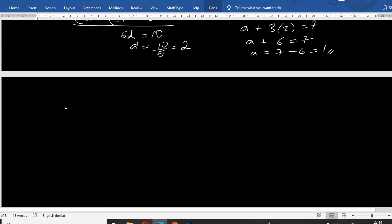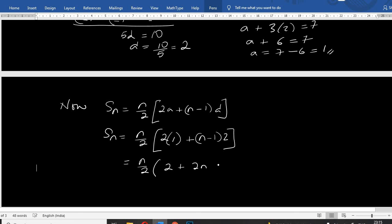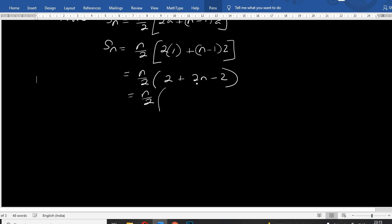Now, Sn equals n by 2, 2A plus n minus 1 D. N by 2, 2A, A is 1, 2 times 1 is 2, plus 2n minus 2. 2n minus 2, n by 2. 2 times n is 2n. So Sn equals N squared.